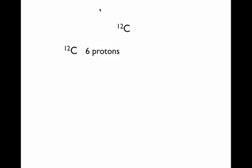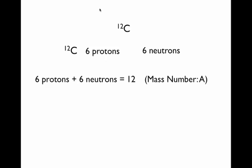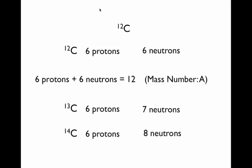Carbon-12 has six protons and therefore six neutrons. That's where the number 12 comes from. This is called the mass number, given the symbol A. Carbon-13 has six protons and seven neutrons, and carbon-14 has eight neutrons.